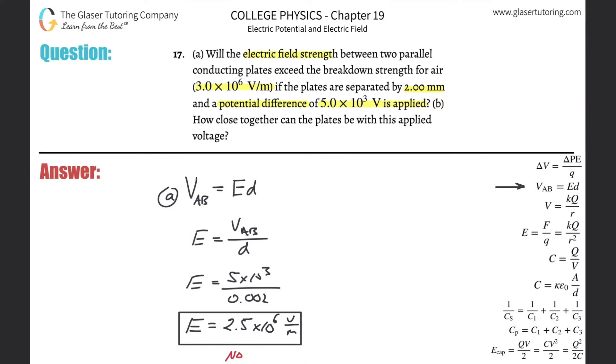Okay, so letter B. Now it says, how close together can the plates be with this applied voltage? So basically they want us to now find the distance between the two plates if it were to just be at the point where the electric field strength would be exceeding that of air.